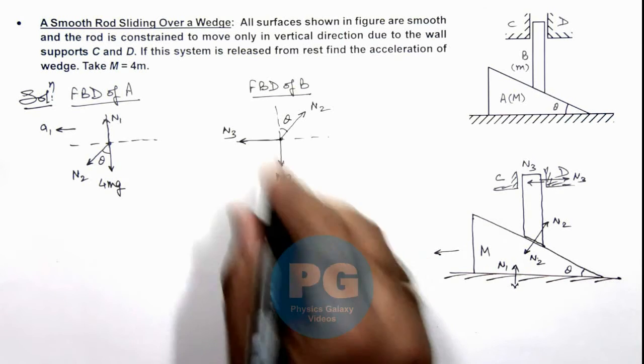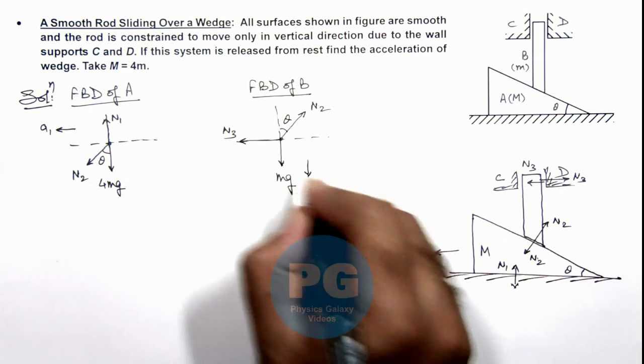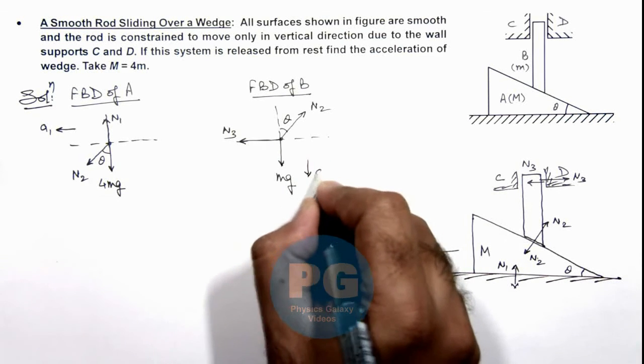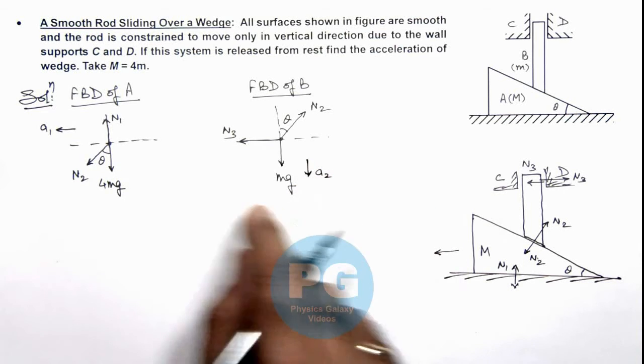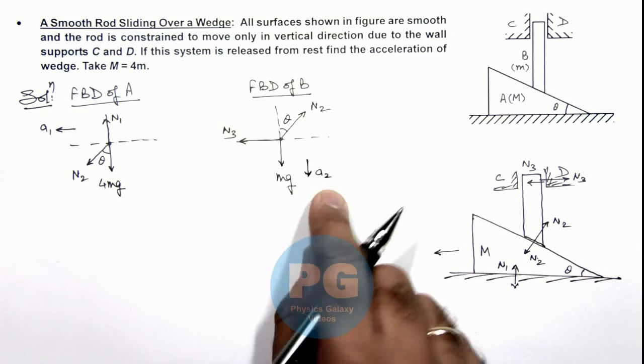Now in this situation the rod will move vertically with an acceleration a2. Then first we can relate the values of a1 and a2 by a constraint relation.